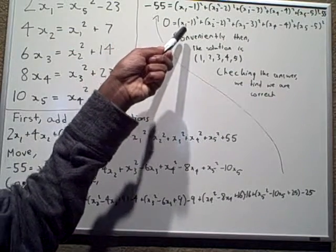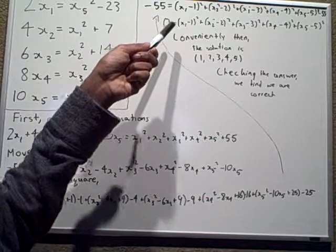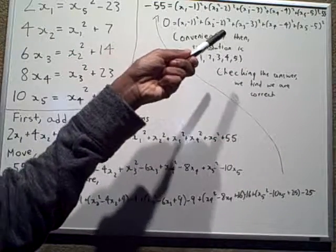Since they're asking for real answers, these all have to equal 0 because none of them can be negative.